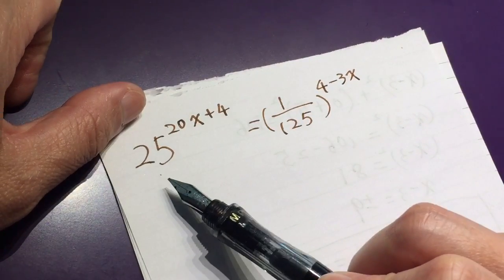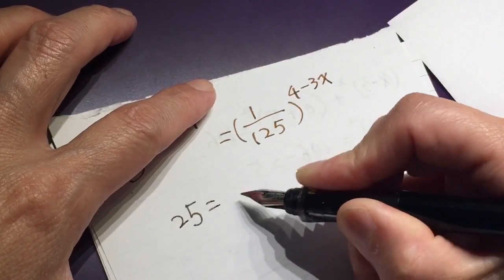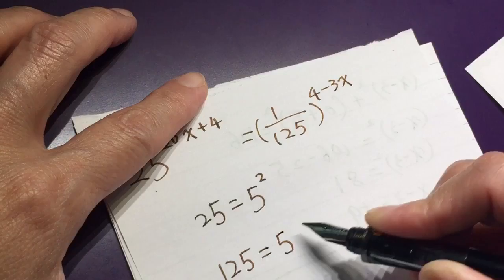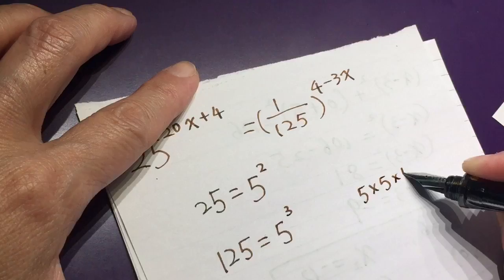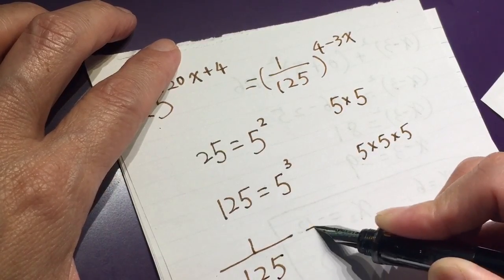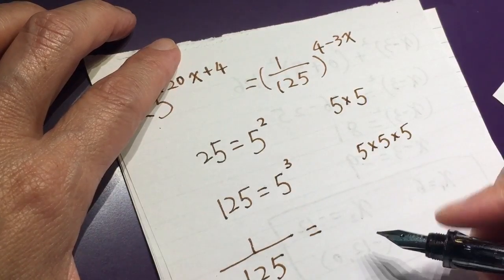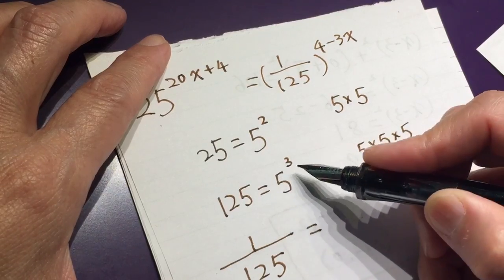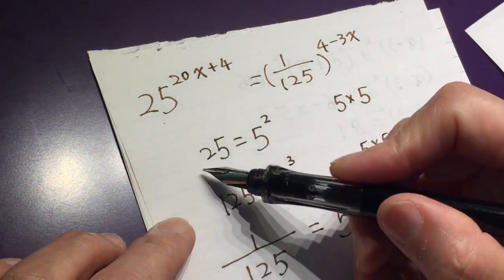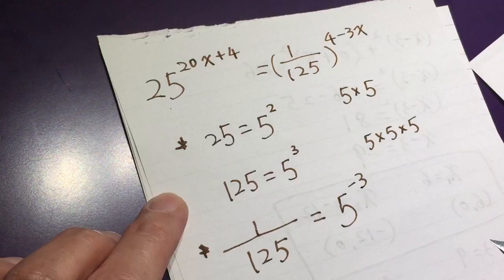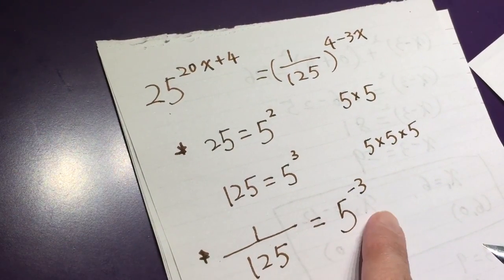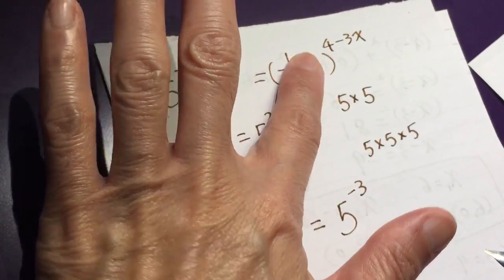25 is 5 to the power of 2, right? 125 is 5 to the power of 3. And 1 over 125 is 5 to the power of negative 3. With this equation established, we can plug in 5 to the power of 2 instead of 25, 5 to the power of negative 3 instead of 1 over 125. Now we can do computation.